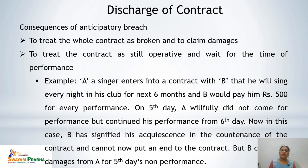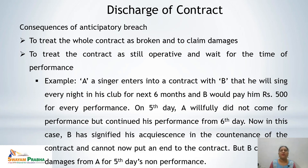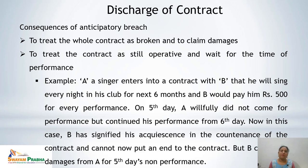The consequences of anticipatory breach are: the whole contract can be treated as broken and damages can be claimed, or the contract can be treated as still operative and the party can wait for the time of performance. For example, a singer contracts with B to sing every night for 6 months at rupees 500 per performance. On the 5th day, A willfully did not come, but continued from the 6th day. B has signified acquiescence in the continuance of the contract and cannot end it, but can claim damages for the 5th day non-performance.